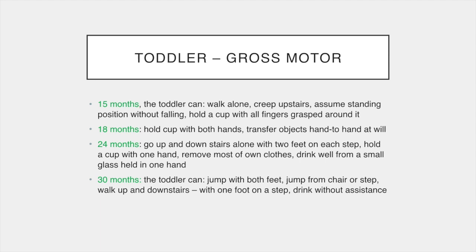For the toddler, one to three years of age, gross and fine motor development come to the fore. The child is now able to move around and explore the environment with increasing skill and dexterity. At 15 months the toddler can walk alone, creep upstairs and assume a standing position without falling. At 18 months they can hold a cup with both hands and transfer objects hand to hand at will. At 24 months they can go up and down stairs alone with two feet on each step and remove most of their clothes. At 30 months the toddler can jump with both feet, jump from a chair or step, and walk up and down stairs with one foot on a step at a time.